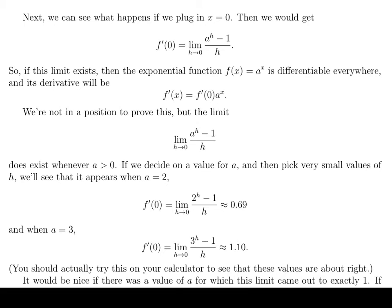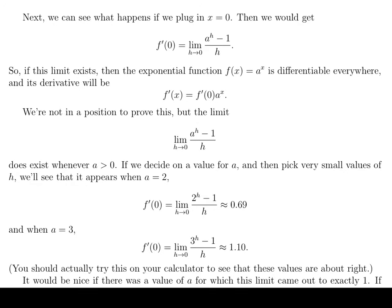Now what we'd really like is a value of a for which the limit came out to exactly 1. If we had such a value of a, then the differentiation formula would look like this. You would see that the derivative of a to the x would be a to the x. Because then this piece here, which is just this limit, would be exactly 1 and then you'd get this great looking differentiation formula. That's a pretty cool formula to say that you have a function whose derivative is equal to itself. Not many functions like that.